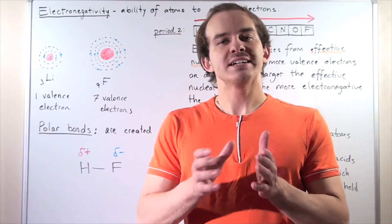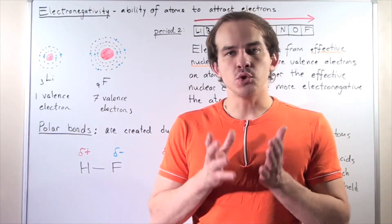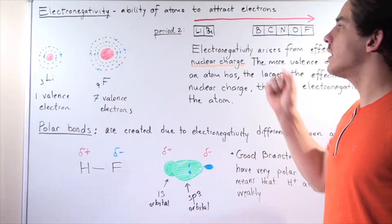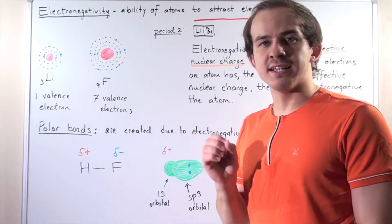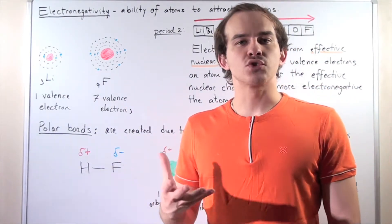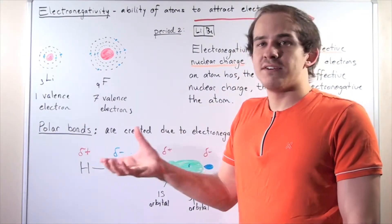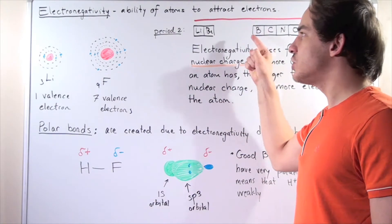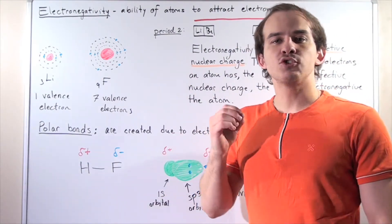Electronegativity is defined as the ability of atoms to attract electrons. In other words, how likely is it that the protons found in the nucleus will attract the electrons in the atom? As electronegativity increases, the atom's ability to attract electrons also increases.